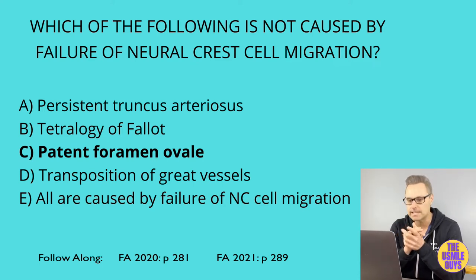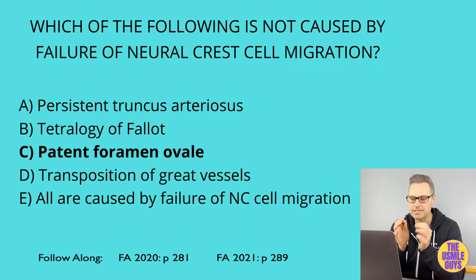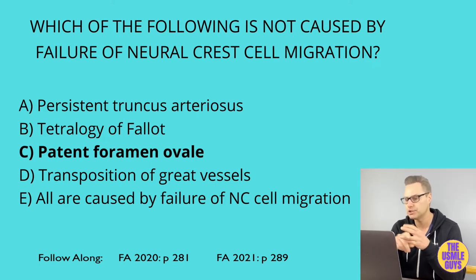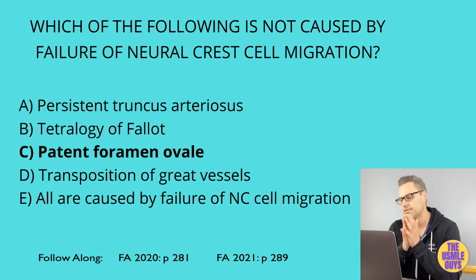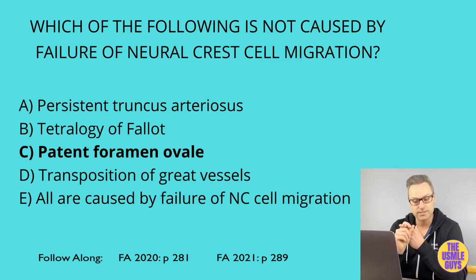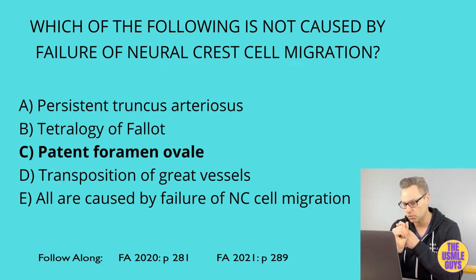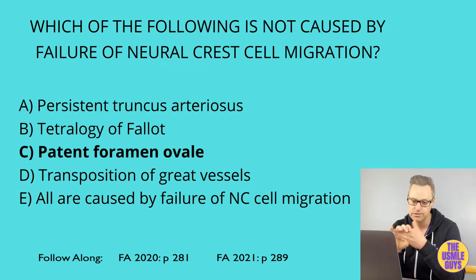A ventricular septal defect, or VSD, which is the most common congenital cardiac anomaly, is likely the result of a problem with the membranous septum. In the development of our outflow tract, we need neural crest cell and endocardial cell migration to aid in the formation of the truncal and bulbar ridges, which spiral, fuse, and form the aorticopulmonary septum, leading to the formation of the ascending aorta and pulmonary trunk. Abnormalities associated with failure of neural crest cell migration include persistent truncus arteriosus, transposition of the great vessels, and tetralogy of Fallot. The aortic and pulmonary valves are derived from endocardial cushions of the outflow tract, while the mitral and tricuspid valves are derived from fused endocardial cushions of the AV canal.